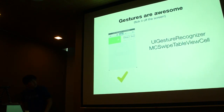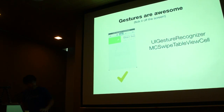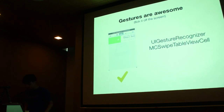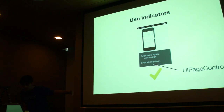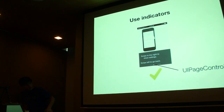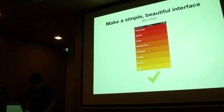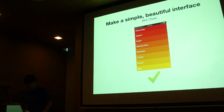Use gestures — they're really important. I think the best thing about Mailbox, an action-based email system, is the fact that you can just swipe the mail off. It's really natural. I found a great open source project called MC Swipe Table View on GitHub that does just that. Alternatively, you can do it yourself with UI Gesture Recognizer. Use indicators too — if you have a swiping screen, how does the user know when to swipe? Use those little page controls for swiping and other indicators that tell the user they can actually do it.